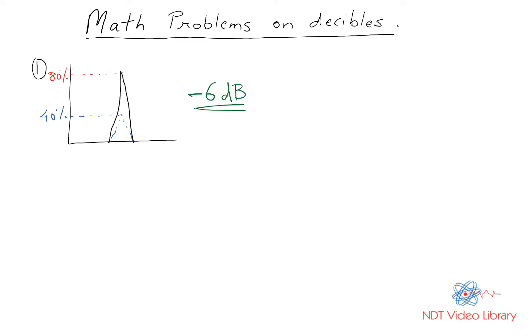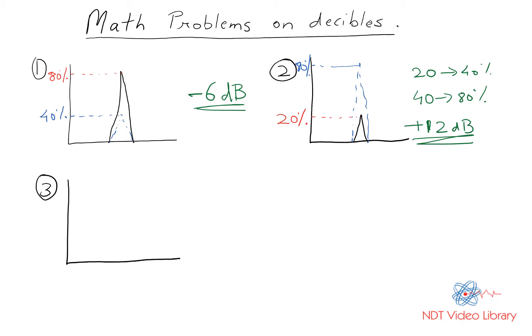Consider a second example where the A-scan display has a signal amplitude of 20 percent originally and then I pump up the gain so the signal goes to 80 percent. Then 20 to 40 is six dBs, and 40 to 80 is another six dBs, which is a total of 12 decibels difference.